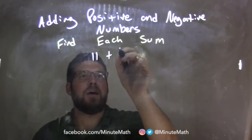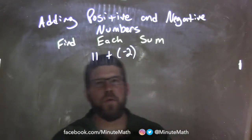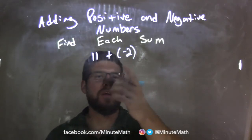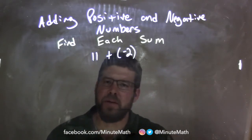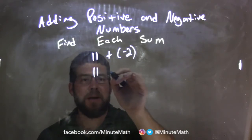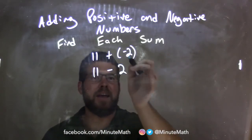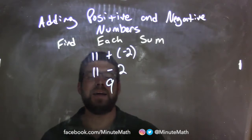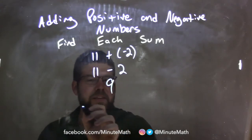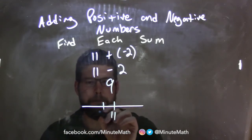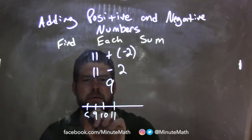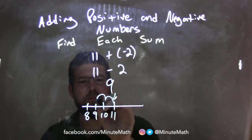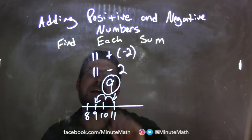11 plus a negative 2. We start with 11 and want to add a negative 2. Adding a negative number is the same thing as subtraction, so we have 11 minus 2, which comes out to be 9. If we see it on a number line, we start with 11 and move to the left 2 units: 1 and 2. We come out with a final answer of 9.